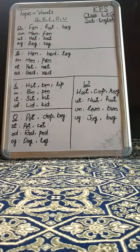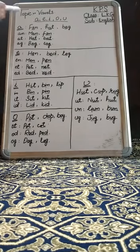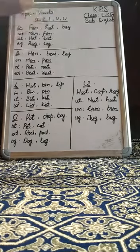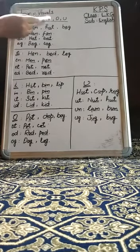As our topic is vowels, so coming to our topic, I have already told you there are 5 vowels and we read them as A, E, I, O, U. Let's say them again: A, E, I, O, U.